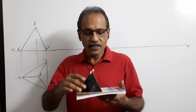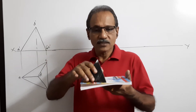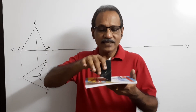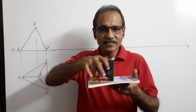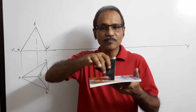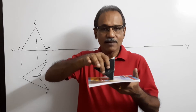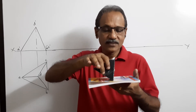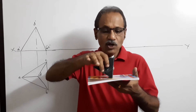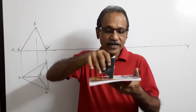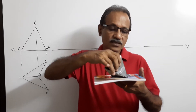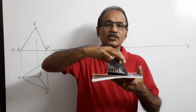Look at this. It is resting on HP on a side, this triangular face containing this edge makes 30 degrees to HP. I am going to rotate the side so that the side on which it is resting, which is perpendicular to VP now, will be made 45 degrees. Look at this — this is the question.